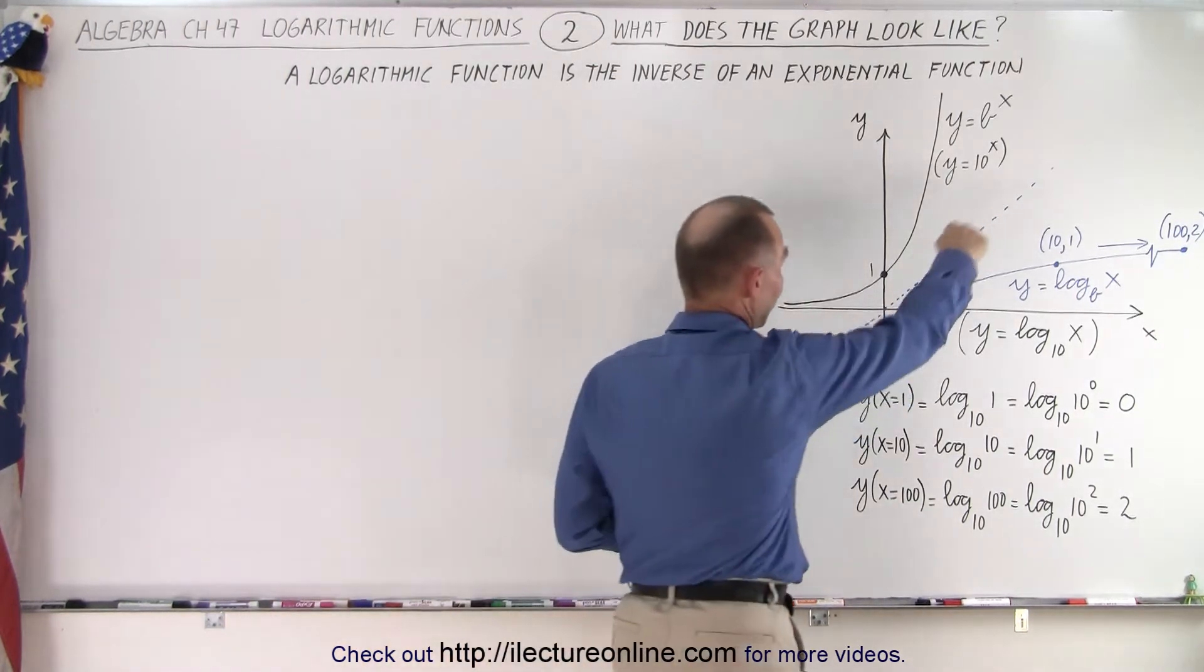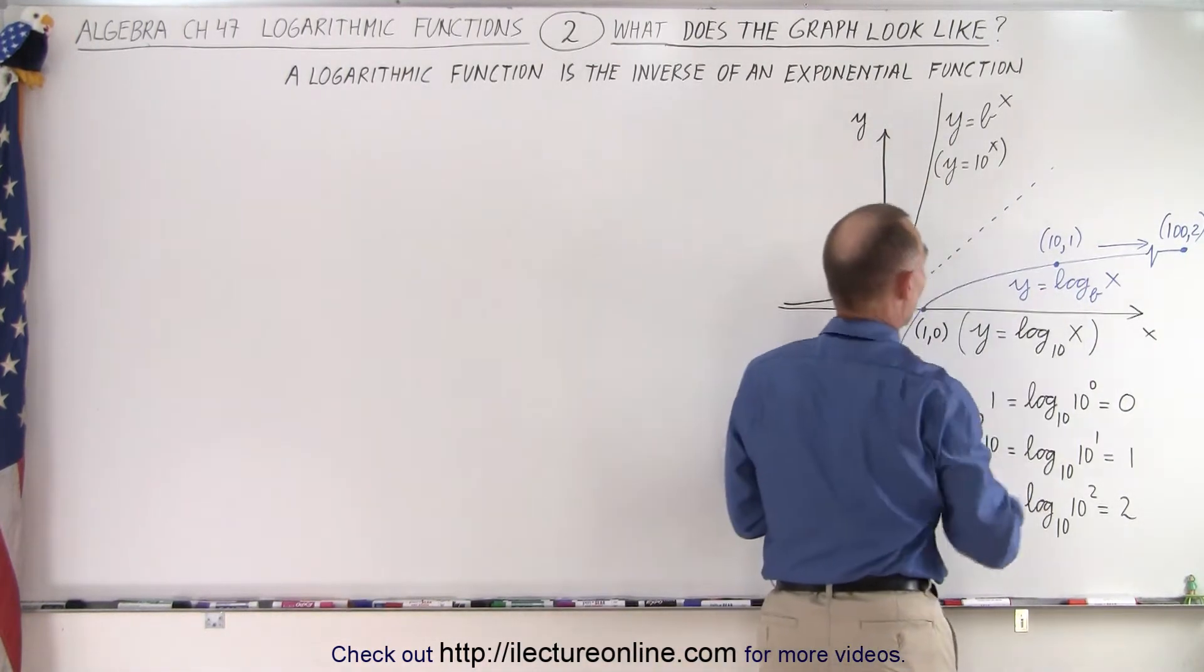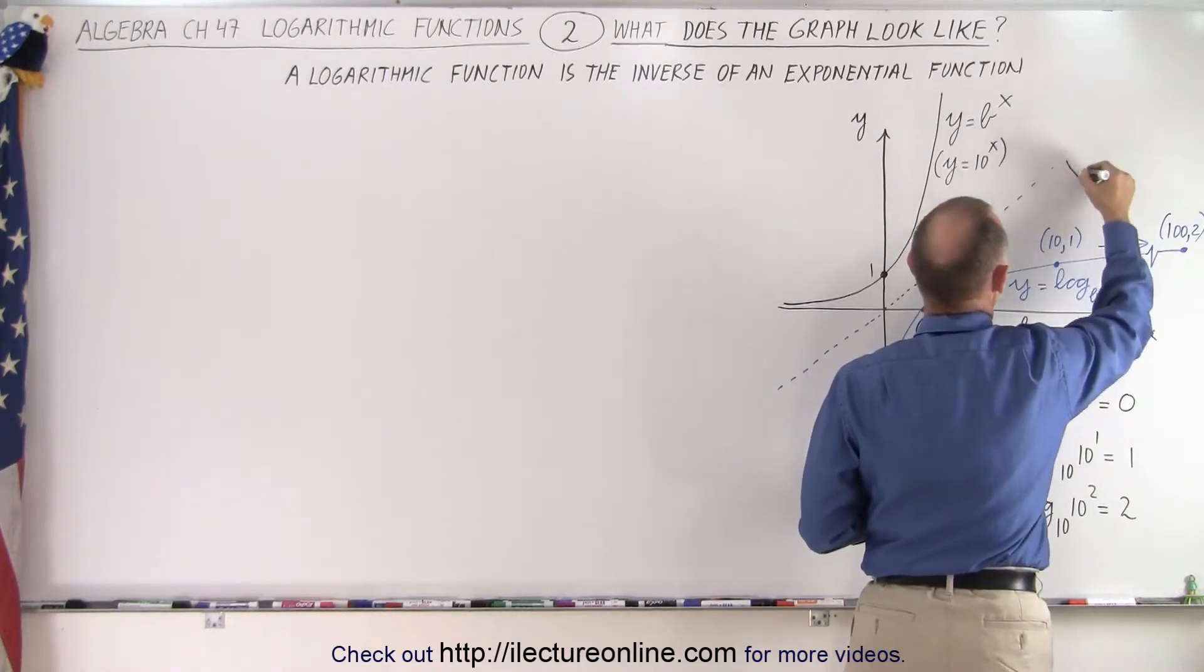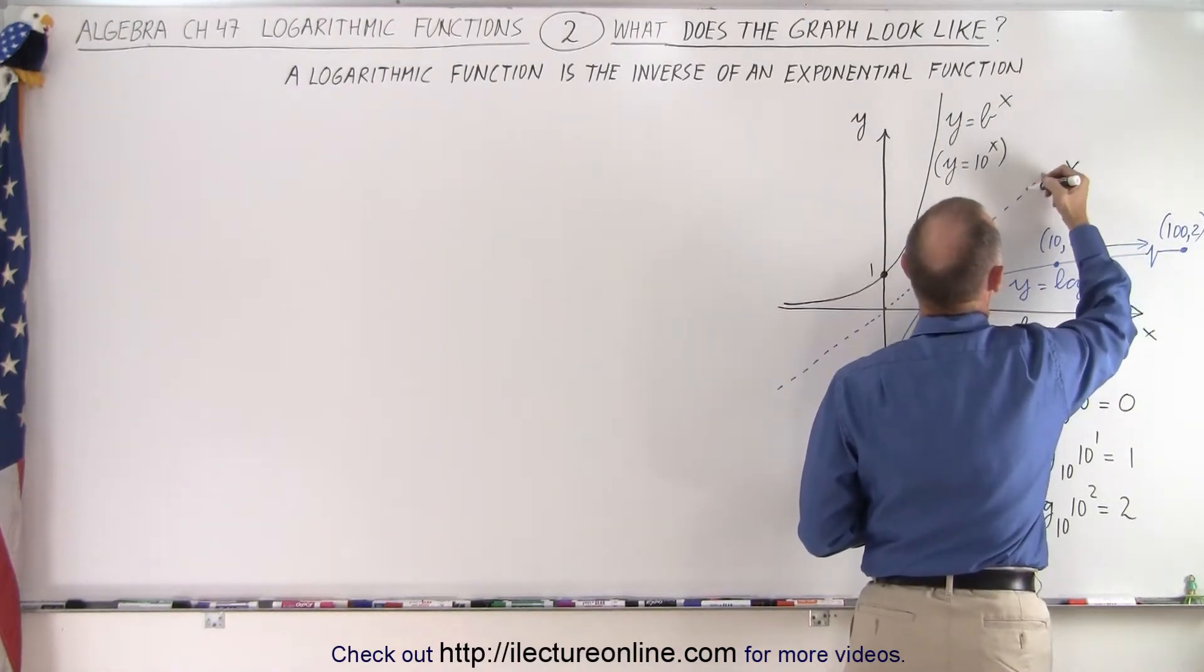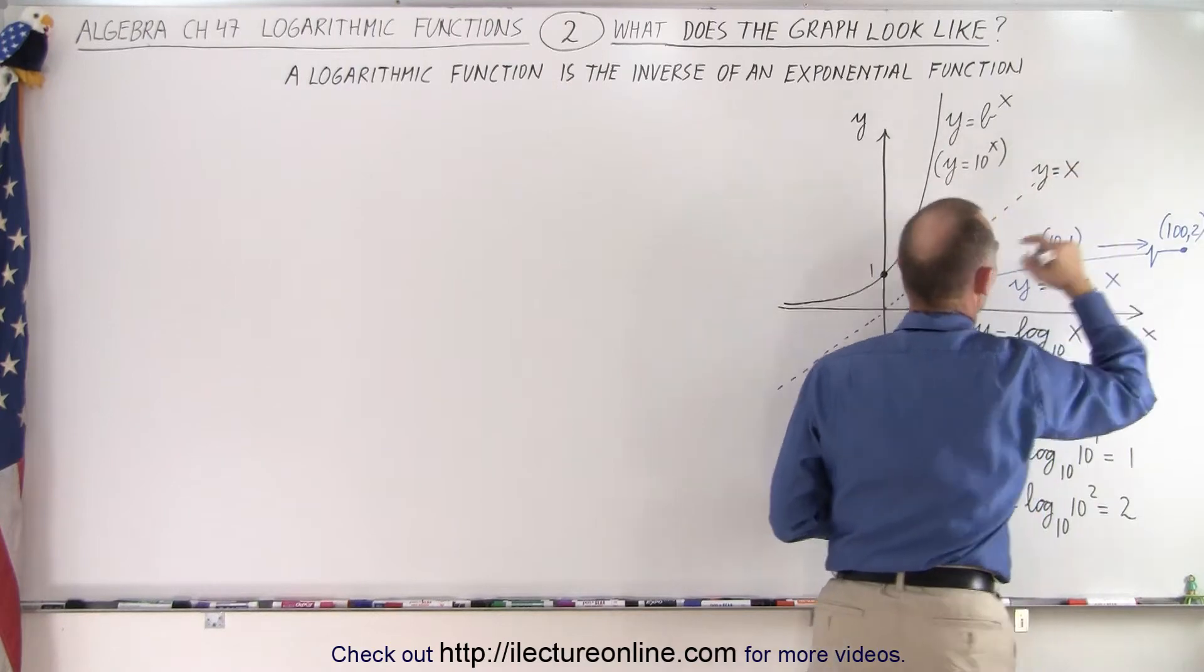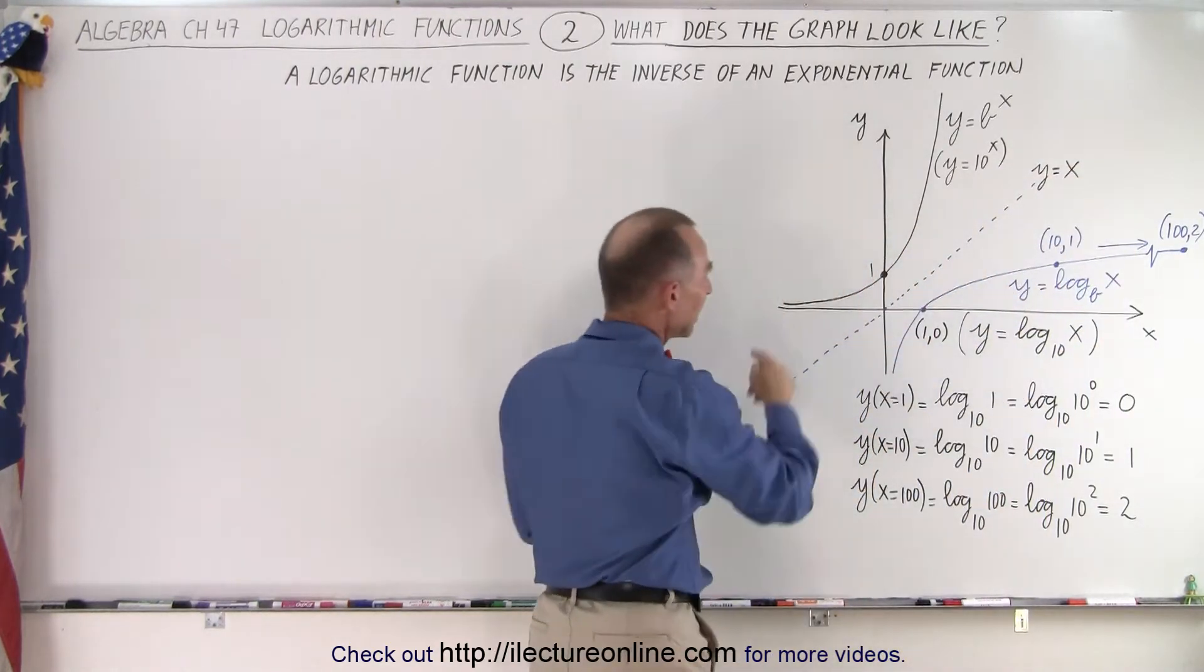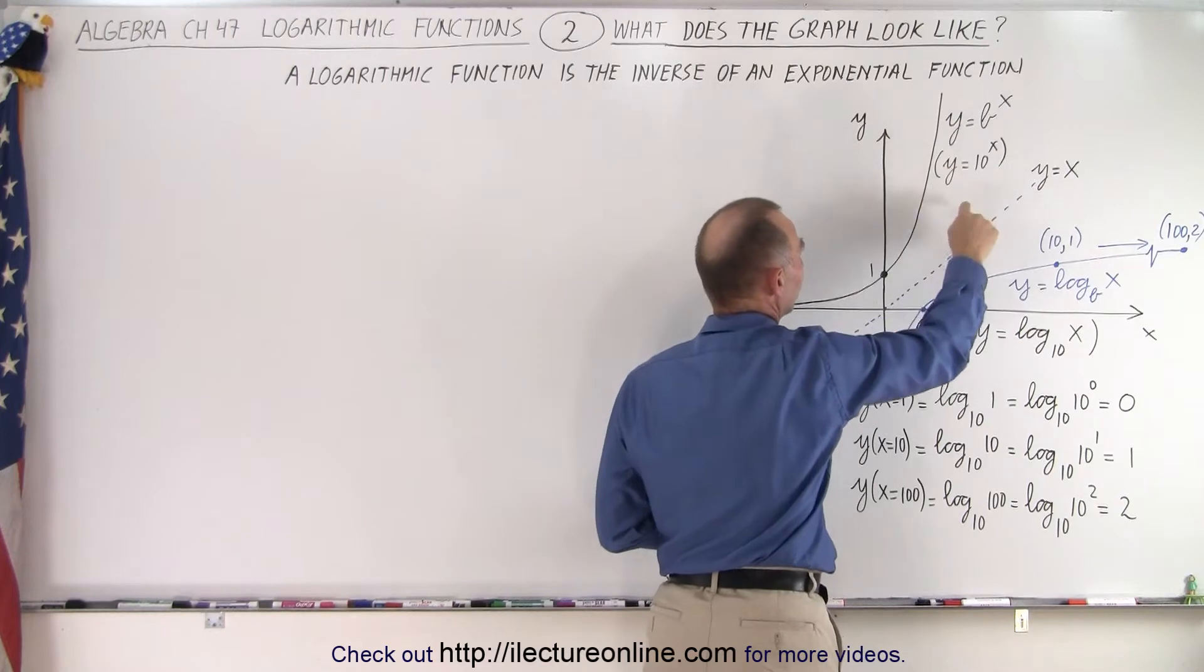So here is the 45 degree line on the y-x coordinate. So this is the line that represents x equals y, or y equals x. The 45 degree line, as we call it. And here, we have what we call the exponential function.